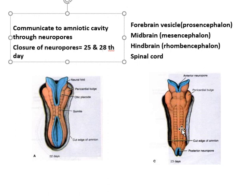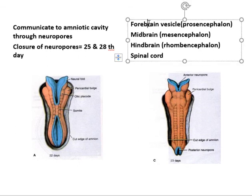This neural tube will give rise to the brain and spinal cord, that is the central nervous system. Cranially, it will expand more as compared to caudally. Caudally it will be in a tapering form. The cranial vesicle will give rise to the forebrain vesicle, midbrain vesicle, and hindbrain vesicle, and the caudal tube-like structure will give rise to the spinal cord.